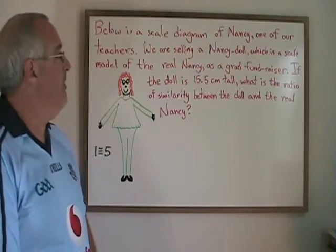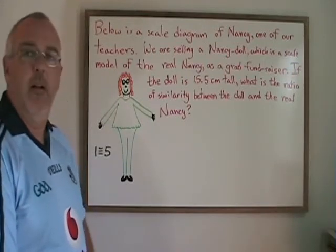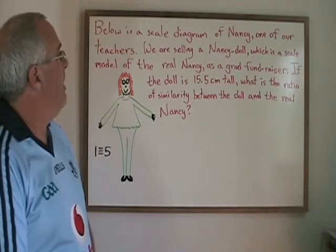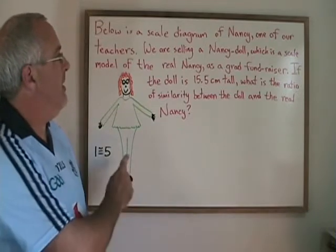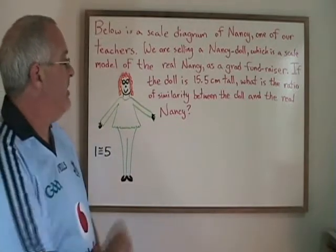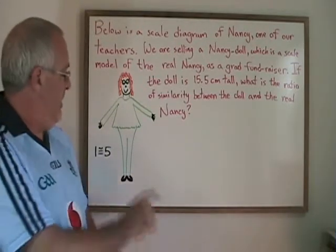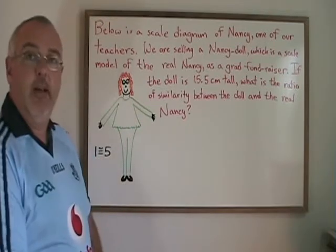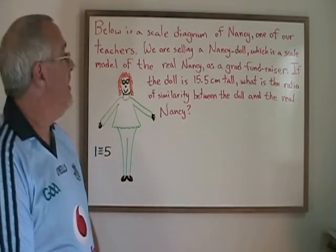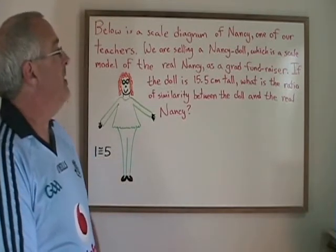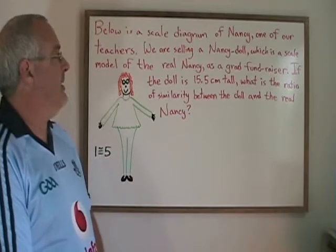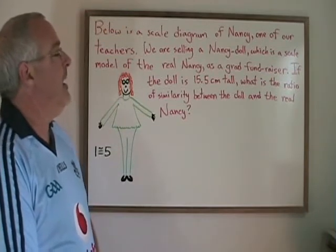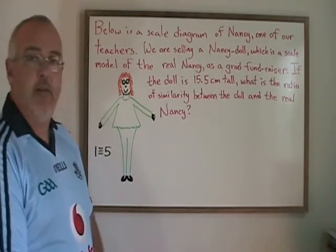Here is another problem that I'd like to call a two-step proportion. Below is a scale diagram of Nancy, one of our teachers, and we can see that this diagram has a 1 to 5 scale. We are selling a Nancy doll, which is a scale model of the real Nancy, as a grad fundraiser.